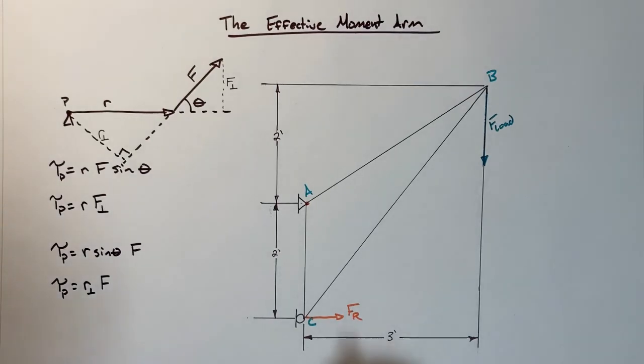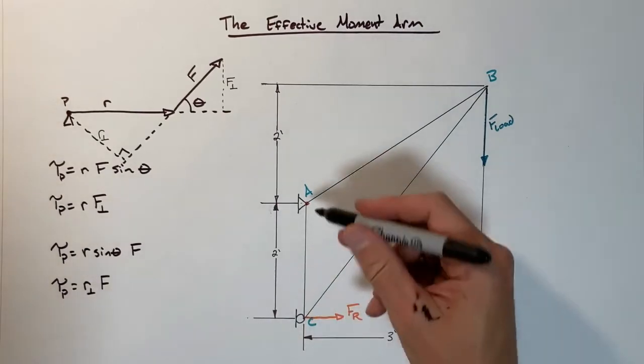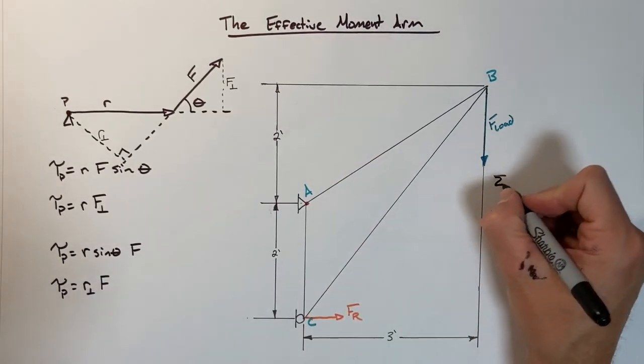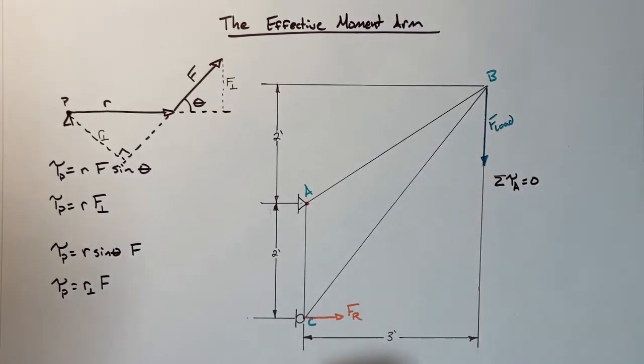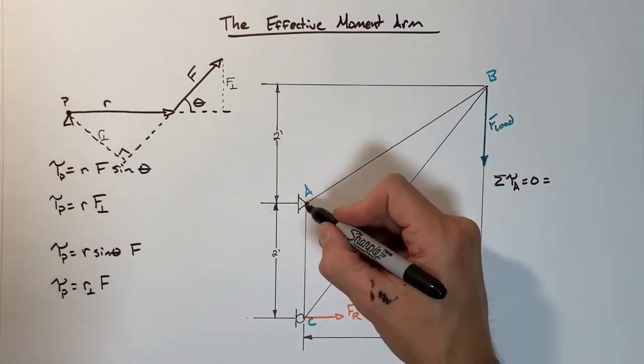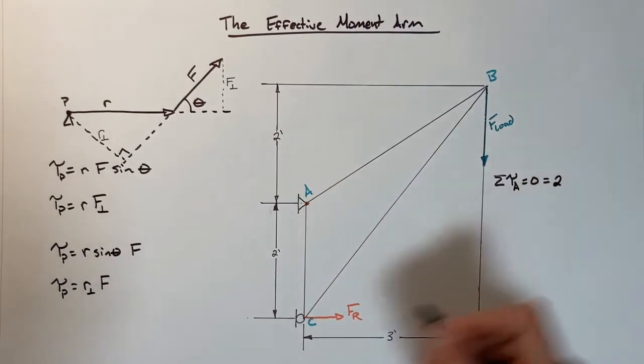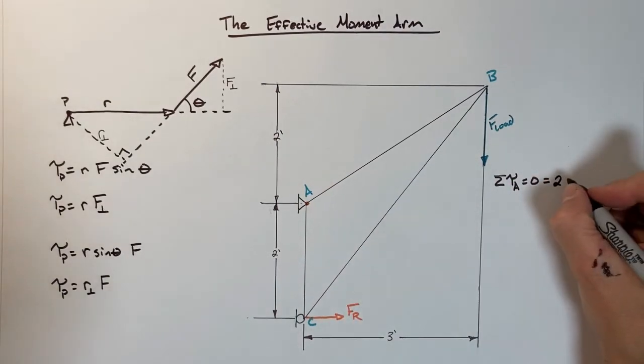The way we'll do that is find the force at the roller by looking at the sum of all torques around point A at the pin. This method, using this thing called the effective moment arm, does not change that at all. We're still trying to go through and solve for the forces or the reaction forces at the supports. But typically in order to find this force, we know the sum of all torques around point A is going to have to add up to zero.